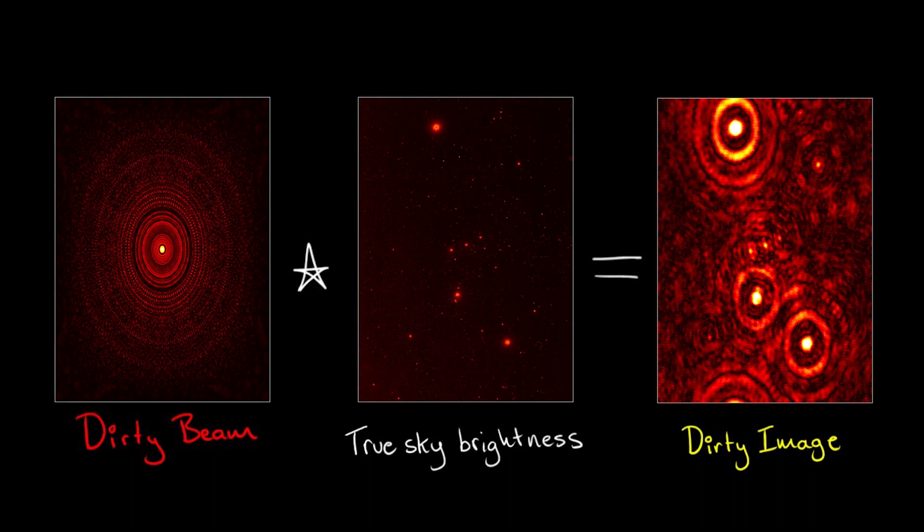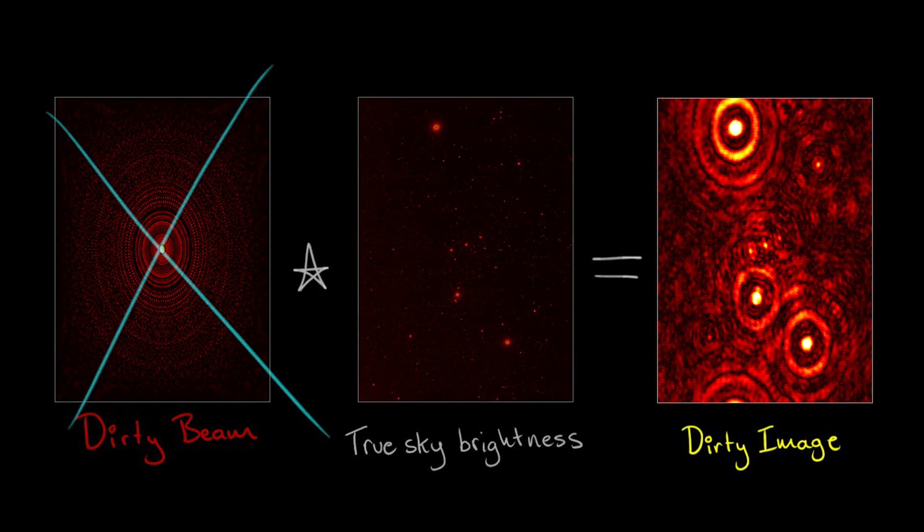As we learned in our video introducing CLEAN, making science images from interferometric data requires deconvolving the point spread function of the array from the initial dirty image.